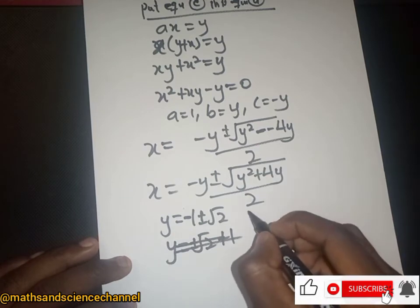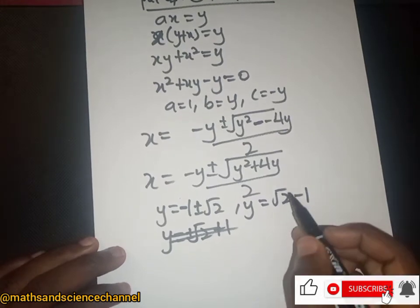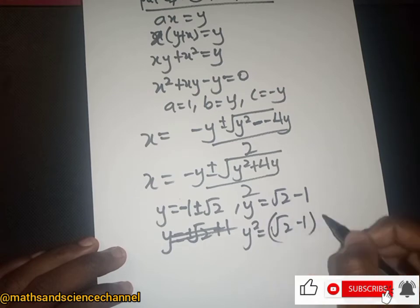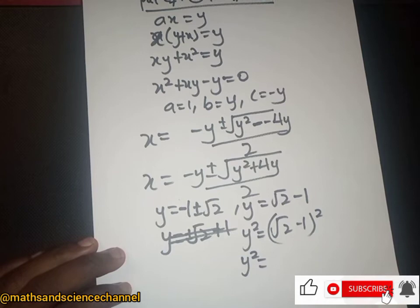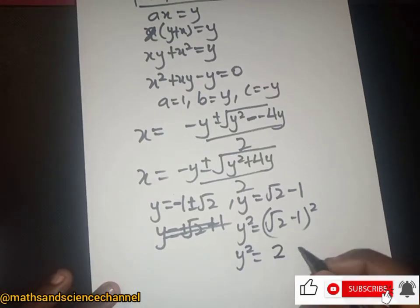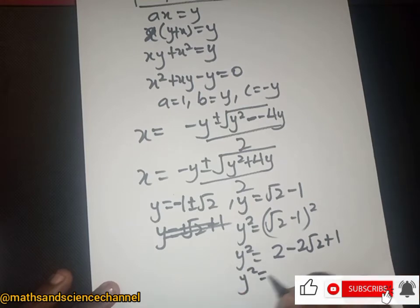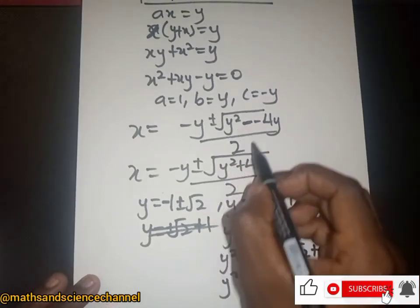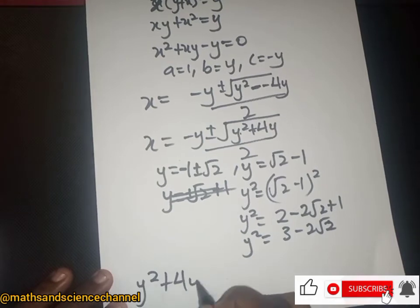Since y is root 2 minus 1, y squared equals (root 2 minus 1) squared, which gives 2 minus 2·root 2 plus 1, equal to 3 minus 2·root 2. Then y squared plus 4y equals 3 minus 2·root 2 plus 4 multiplied by y.